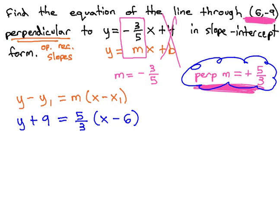We now have the equation of a line that goes through (6, -9) and is perpendicular to the other line, y = -3/5x + 4. However, the directions also request that we put it in slope-intercept form. This means we must clear the parentheses, then isolate the y.